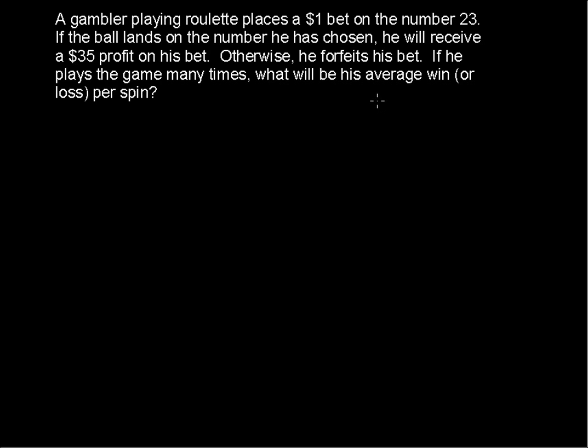A gambler playing roulette places a one-dollar bet on the number 23. If the ball lands on the number he has chosen, he will receive a $35 profit on his bet. Otherwise, he forfeits his bet. If he plays the game many times, what will be his average win or loss per spin?